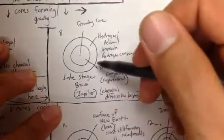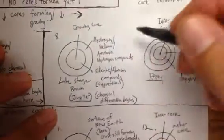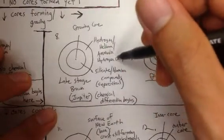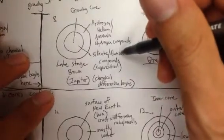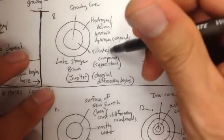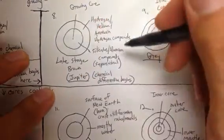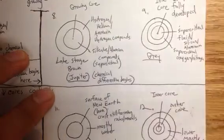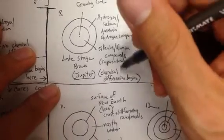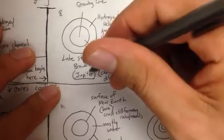When it's cool enough to allow the chemicals to start differentiating themselves, all the material will fall inward. You'll have hydrogen helium ammonia and hydrogen compounds, silica and aluminum compounds. These are super critical, meaning they're really hot and pressurized but mostly undifferentiated. It begins differentiating by their weight and properties. This is late stage brown dwarfs such as Jupiter.